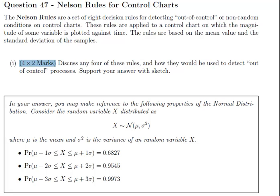Now, in your answer, you may make reference to the following properties of the normal distribution. Within plus or minus one standard deviation of the mean, we would find 68.27% of the observations. Between minus two standard deviations and plus two standard deviations from the mean, we would find 95.45%. And within three standard deviations of the mean, on either side, we would find 99.73%.